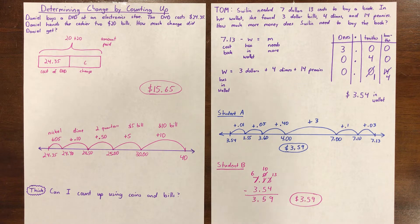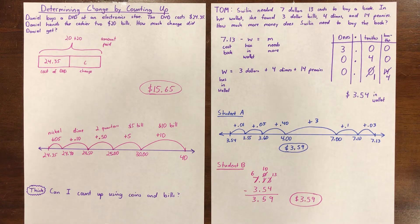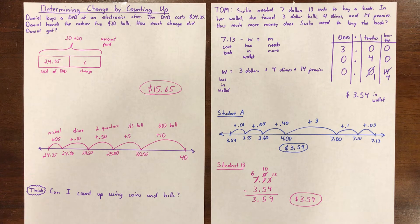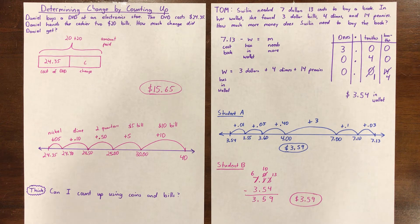They both work — they're both right. Why do both of these strategies work? Say it out loud. Both strategies allow us to find the difference between the cost of the book and the amount that she has in her wallet right now.